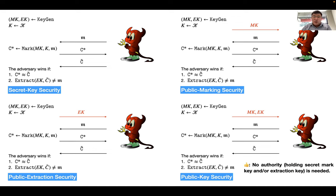In real-world applications, if we use a watermarking scheme with only the first three security guarantees, we must set up a watermarking authority to hold either the marking key, the extraction key, or both. Such an authority is usually a single point of failure: if an adversary corrupts the authority and obtains the keys, it can remove all messages embedded in all watermarked circuits — a serious security threat. If we use a scheme with public key security, we do not need such an authority, and the problem is resolved.